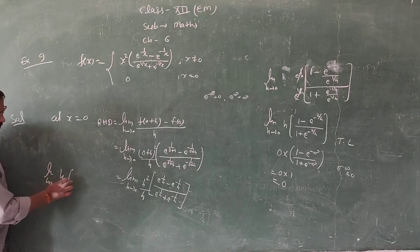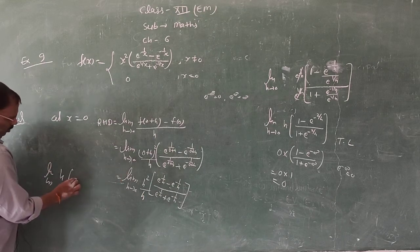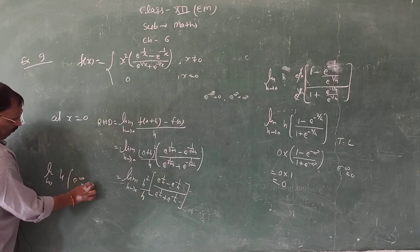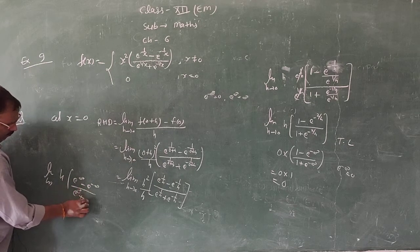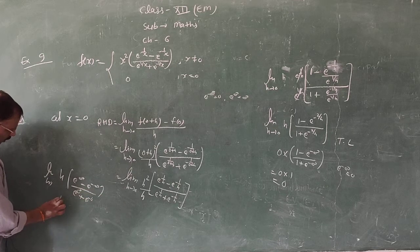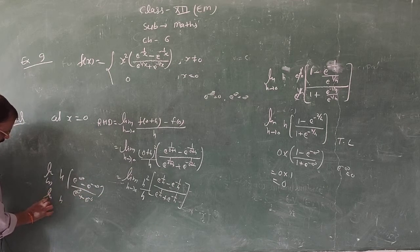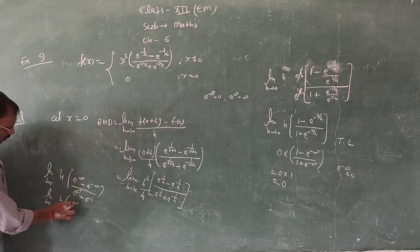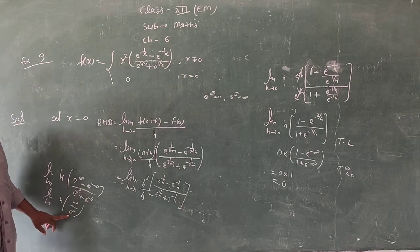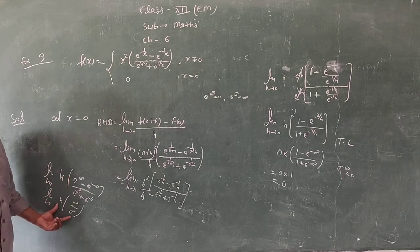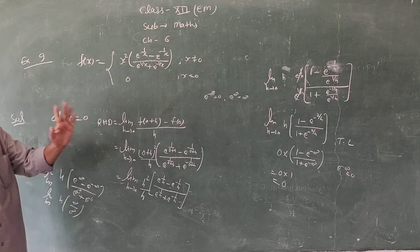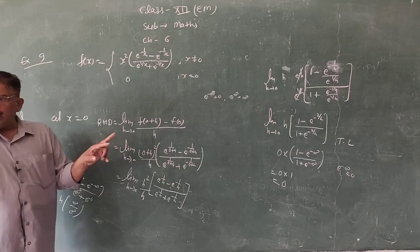Note: If we take the direct limit without simplification, we get [e^(infinity) minus e^(-infinity)] divided by [e^(infinity) plus e^(-infinity)], which is infinity upon infinity — an indeterminate form. So direct substitution does not work; we must simplify first.